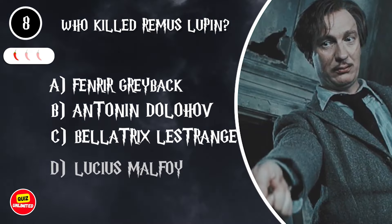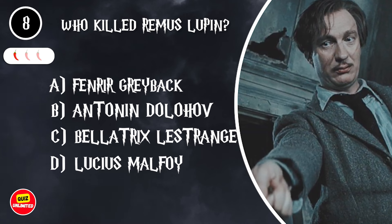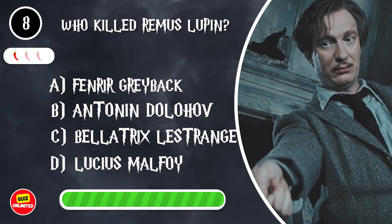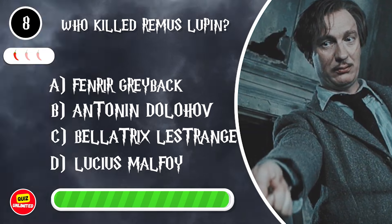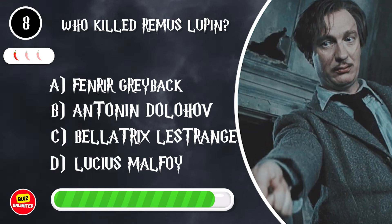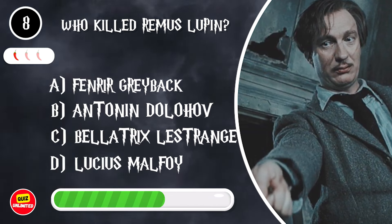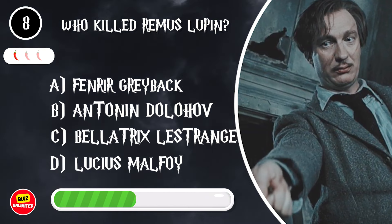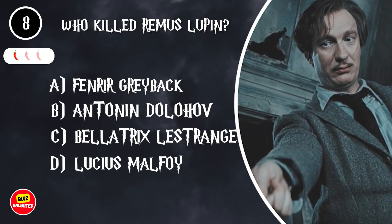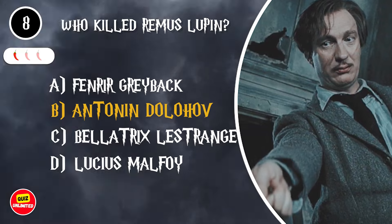Who killed Remus Lupin? A. Fenrir Greyback. B. Antonin Dolohov. C. Bellatrix Lestrange. D. Lucius Malfoy. It's B. Antonin Dolohov.